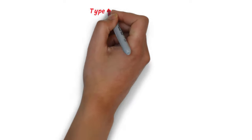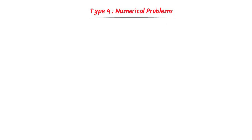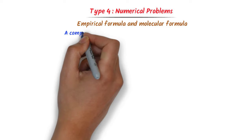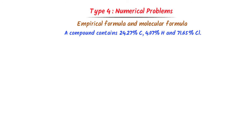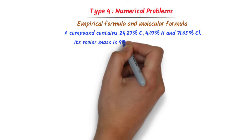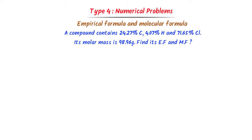Lastly, let me teach you Type 4 numerical problems: calculating both empirical formula and molecular formula. Consider this problem — a compound contains 24.27% carbon, 4.07% hydrogen, and 71.65% chlorine, with a molar mass of 98.96 grams. Find its empirical formula and molecular formula. In such problems, I first find the empirical formula, then find the molecular formula.